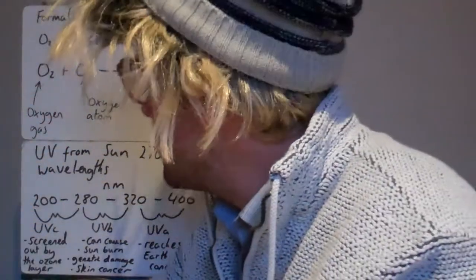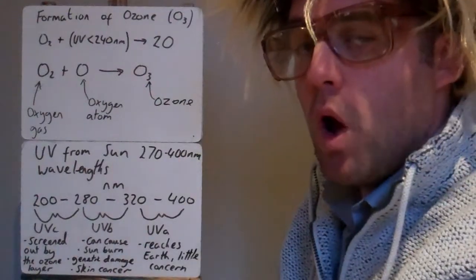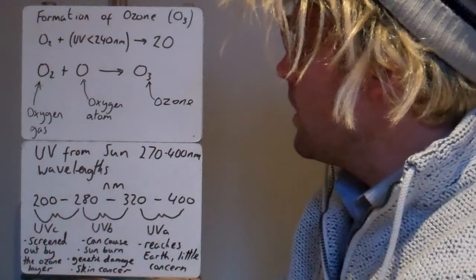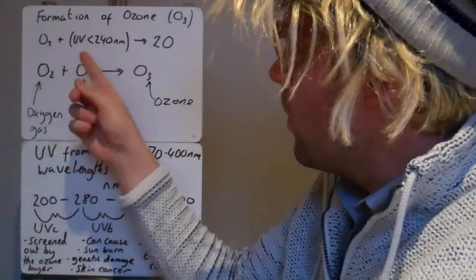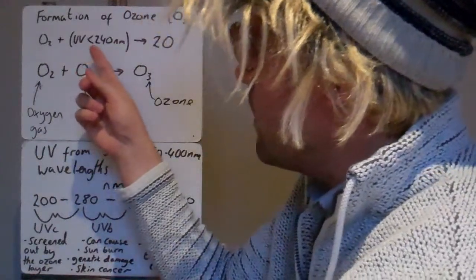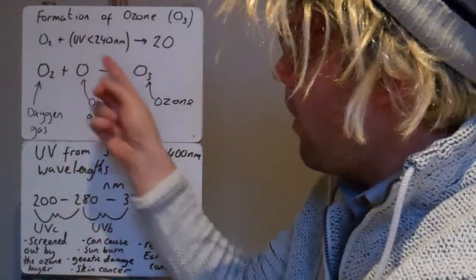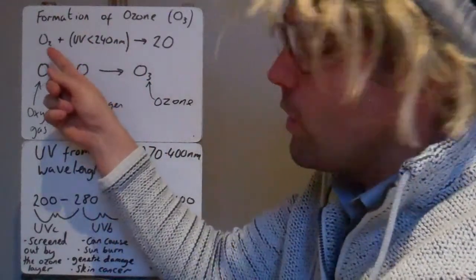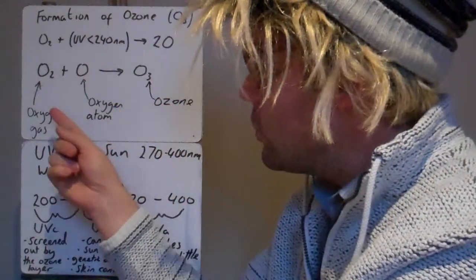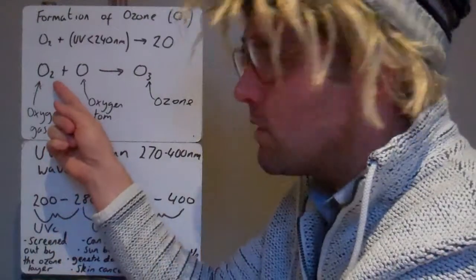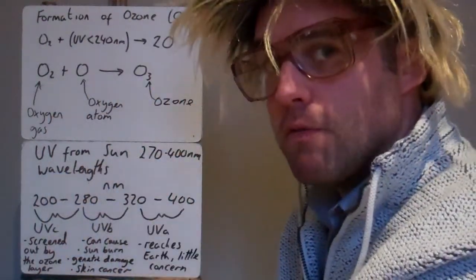Right, so ozone, when we talk about ozone, we talk about O3, the molecule O3, three oxygens joined together. So how is it made? Well first off, O2, oxygen gas, when that's hit by UV with a wavelength less than 240 nanometers, that high-energy UV breaks up the O2 molecule to make two oxygen atoms. So those oxygen atoms then can go on and react with a different oxygen molecule to make O3. So that's how it's formed in the stratosphere.